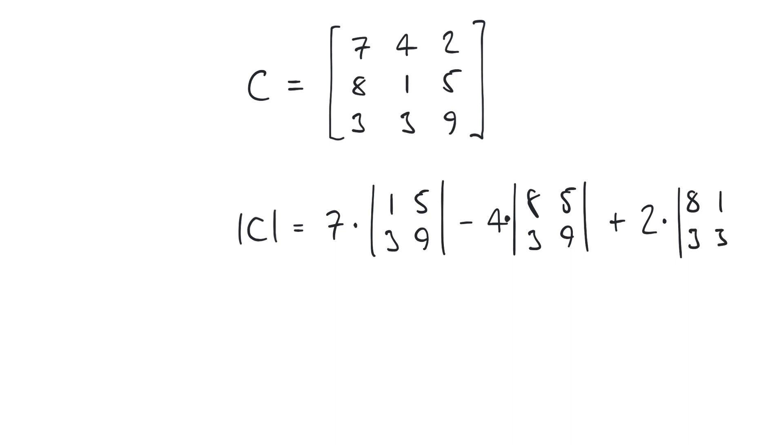And so, when we work that out, hopefully by this point we know how to work out the determinant of these 2 by 2 matrices. We can write it out as something like this. And we come to a final answer of minus 228.